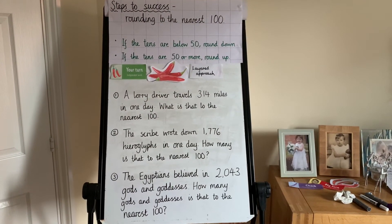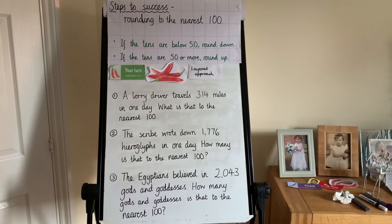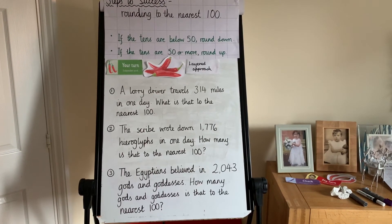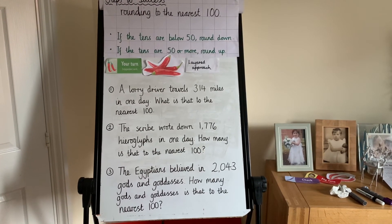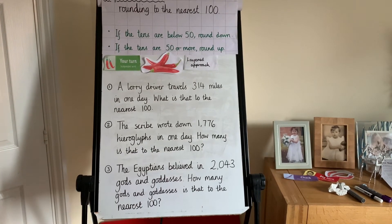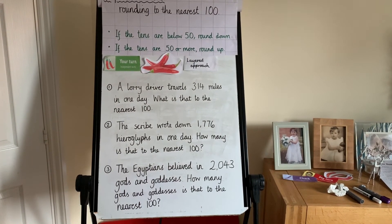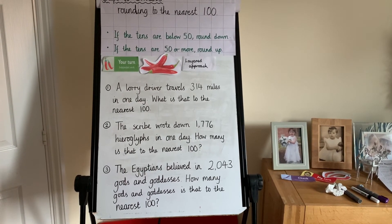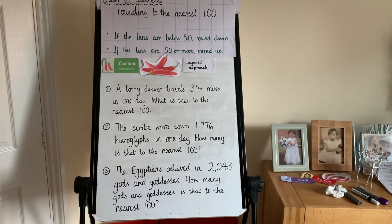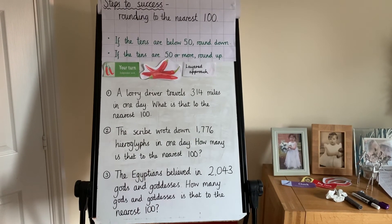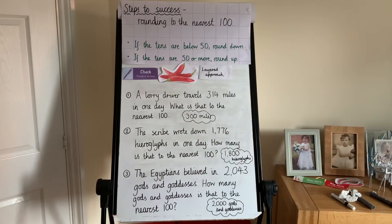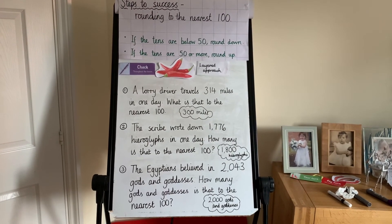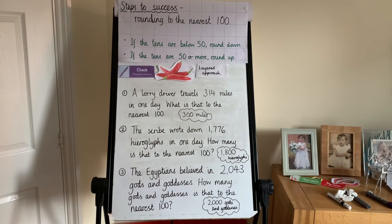Now have a go at chilli 3. A lorry driver travels 314 miles in one day — what is that to the nearest 100? There were 1,776 hieroglyphs in one day — how many is that to the nearest 100? And the Egyptians believed in 2,043 gods and goddesses — how many is that to the nearest 100? The answers are: 300 miles, 1,800 hieroglyphs, and 2,000 gods and goddesses. That's it for rounding to 100.